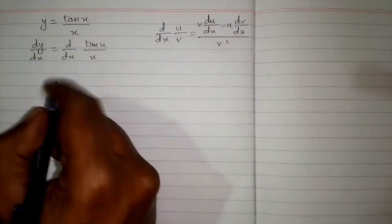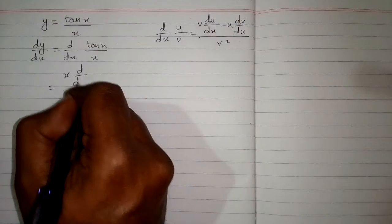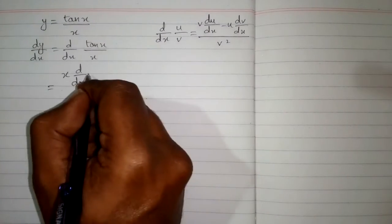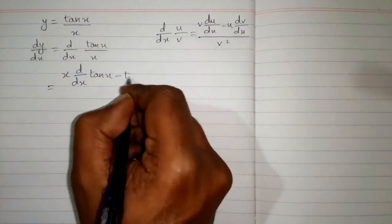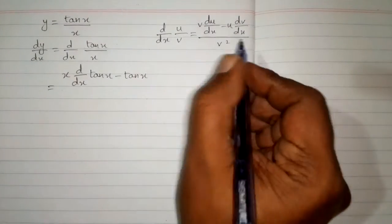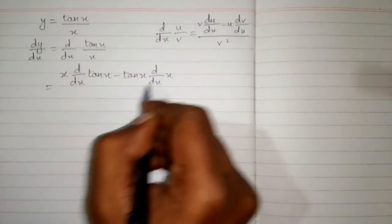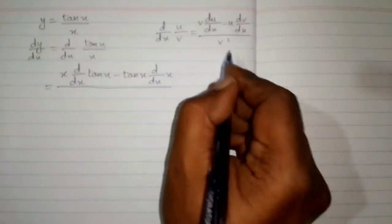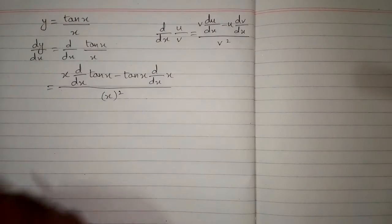So first we will write v and v is x and the derivative of u. So we will write derivative of tan x minus u, u is tan x, and the derivative of v that is d by dx of x upon v square and v is x so v square is x square.